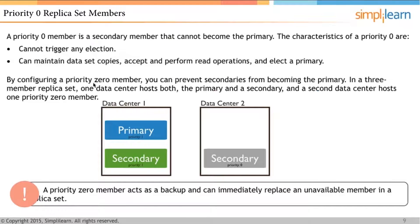Priority 0 replica set members are secondaries that can never become the primary. A priority 0 member cannot trigger any election, but it can maintain data set copies, accept and perform read operations, and vote in an election. By configuring a priority 0 member, you can prevent secondaries from becoming the primary.